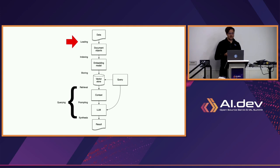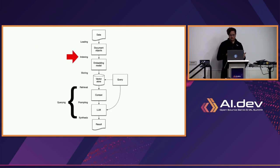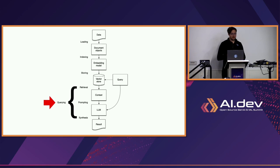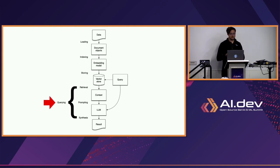So first, let's recap the stages of a RAG application. First, you get your data wherever it is and you load it in using those connectors from LlamaHub. Then you need to embed them in vector space so that you can find the most relevant data — that's called the indexing phase. Then you need to store all of your embedded data somewhere — that's where all of those vector stores come in, the storage phase. And then there's the querying phase, which is the most complicated, because it's really three things in one: first you retrieve your data, then you combine the retrieved context with your query in a phase called synthesis, then you combine that with your prompt and send it to the LLM.